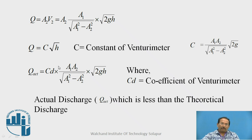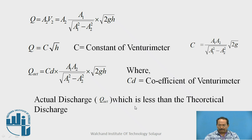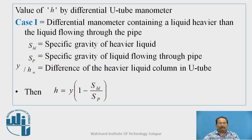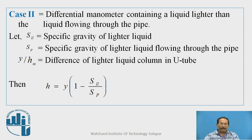Adding the coefficient of the venturimeter, the actual discharge is Q_actual = C_D · (A1·A2 / √(A1² - A2²)) · √(2gH), where C_D is the coefficient of discharge of the venturimeter and its value is always less than or equal to 1. The actual discharge is always less than the theoretical discharge. The value of H can be found from the differential manometer readings using the specific gravity of the manometric liquid and the specific gravity of water.